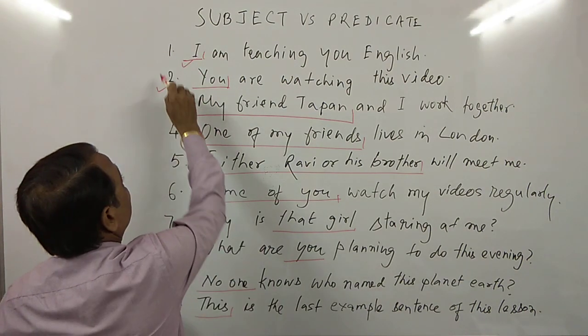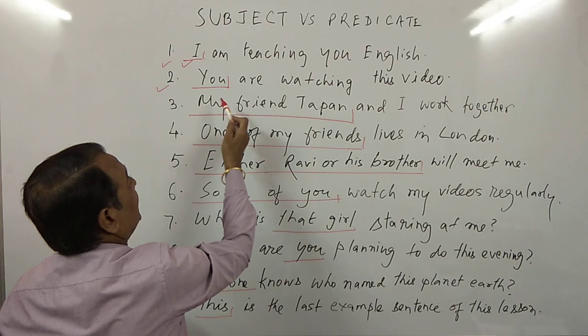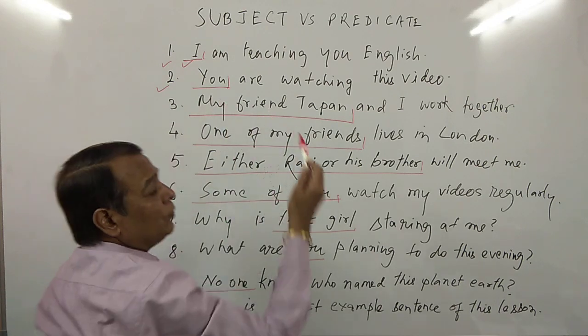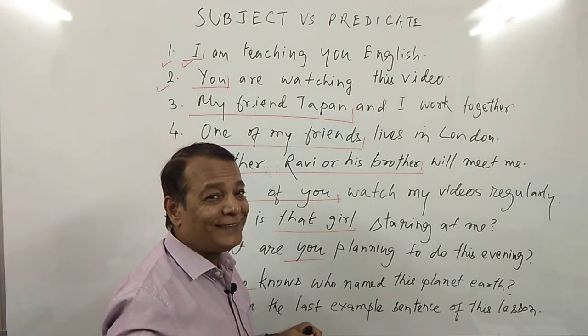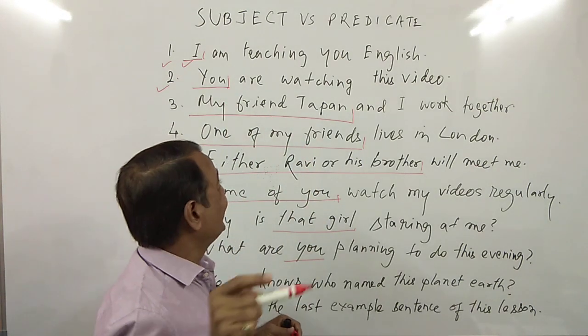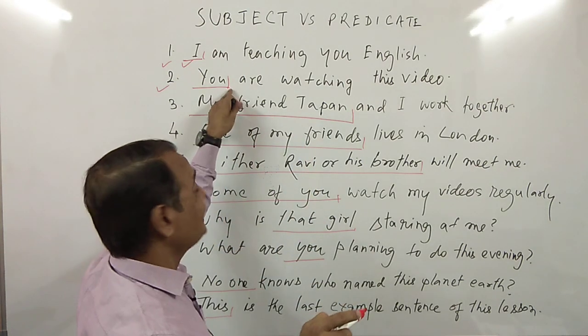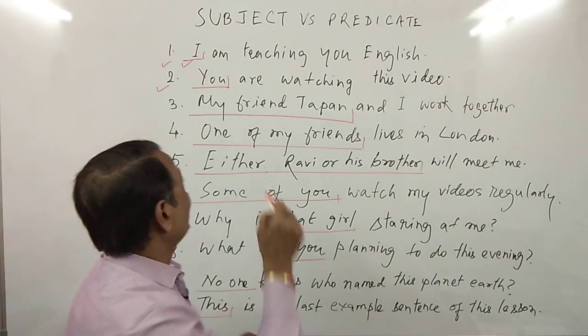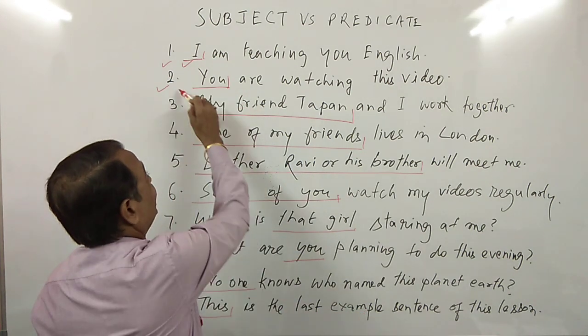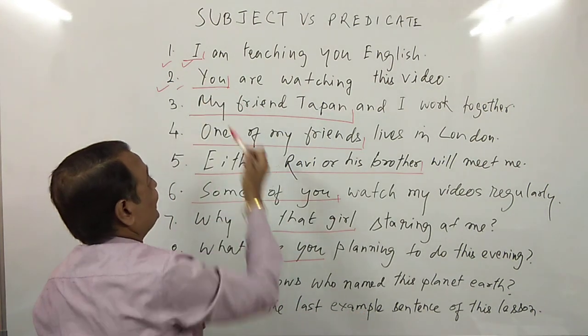Number two: 'You are watching this video.' Here, in this sentence, I am talking about you. So the subject is 'you'.